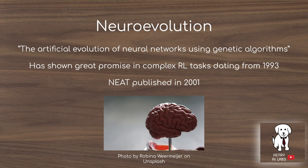Neuroevolution is the idea of the artificial evolution of neural networks using genetic algorithms. It's a really cool idea combining biological evolutionary algorithms and simulating them to design neural networks. This has shown great promise in complex reinforcement learning tasks like control problems such as the cart pole balancing problem, dating back from 1993. The NEAT foundational algorithm, involving not just the weights but also using evolution to search for the architectures of neural networks, was published in 2001.